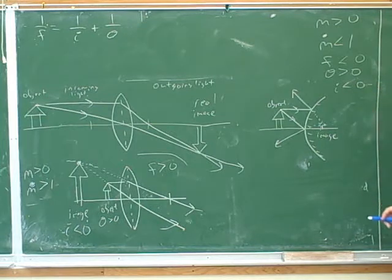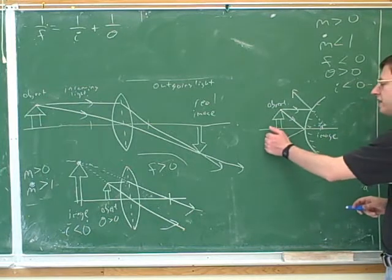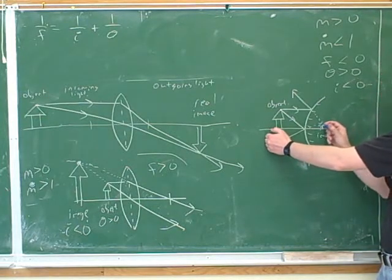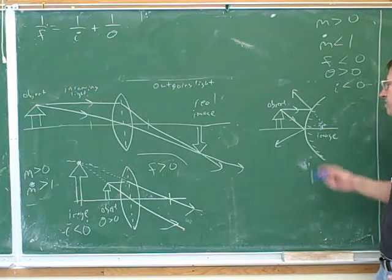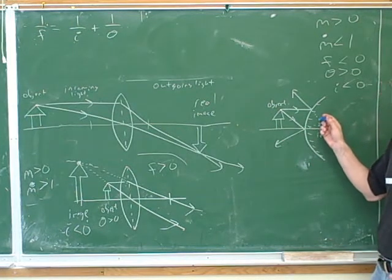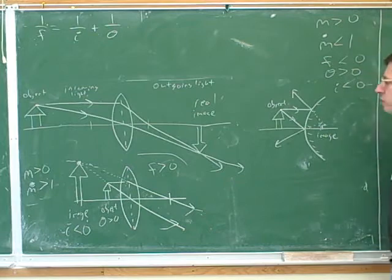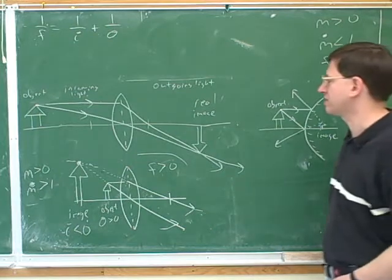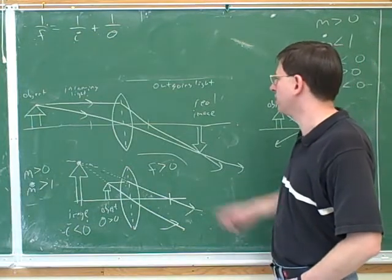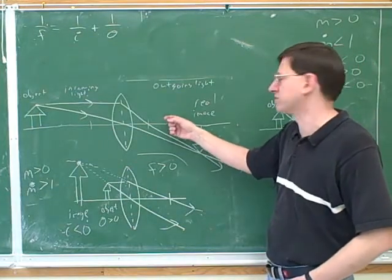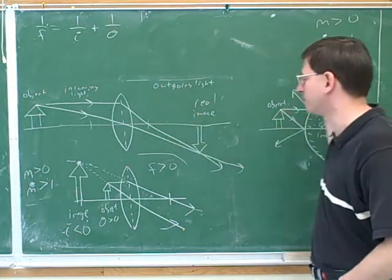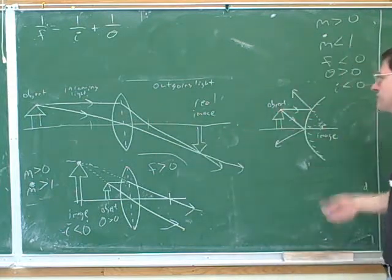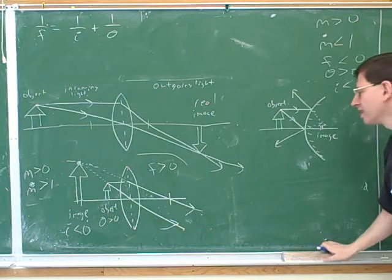How do we know it's virtual? The outgoing light is on the left, but the image is on the right — the opposite side. Or the other way: the image is formed by the trace extensions, which always means virtual. It's important to be able to squeeze as much information as you can out of the picture. We'll leave repeating this exercise for homework.